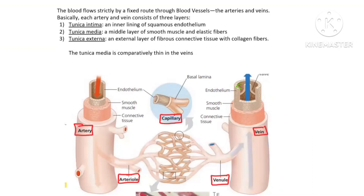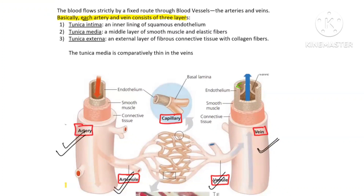Both artery and vein — that is important. Each artery and vein consists of three layers. Note that I am not saying capillary; I am saying artery and vein. So artery, arterioles, venules, and vein — only these have three layers. We are not including capillaries. They consist of three layers.